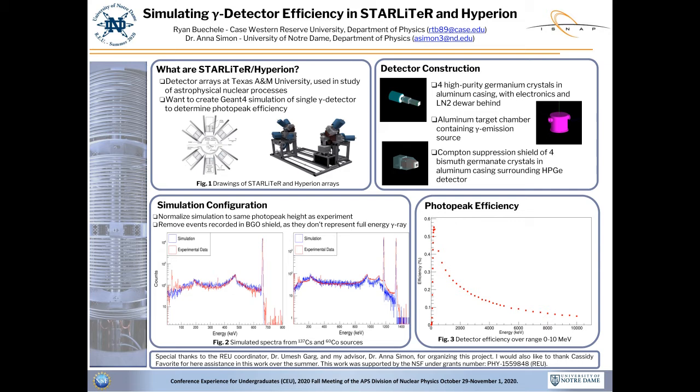The plot on the left is the spectrum of cesium-137 with one 662 keV gamma ray. On the right is the spectrum of cobalt-60 with two gamma rays at 1173 and 1332 keV. The simulation spectra have been normalized to match the photopeak height of the experimental data. Additionally, any simulated event in which the bismuth germanate crystals of the Compton shield recorded energy from a gamma ray has been excluded from the spectrum, since the full energy of the gamma ray was not absorbed in the germanium crystals. With this treatment, the shape and height of the simulated spectra match very well with the experimental data. Most discrepancies in the shape can be attributed to background noise in the experimental data.